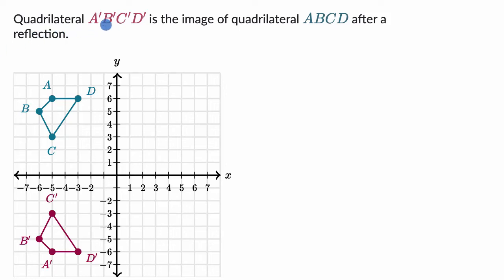We're told that quadrilateral A prime, B prime, C prime, D prime is the image of quadrilateral ABCD after a reflection.